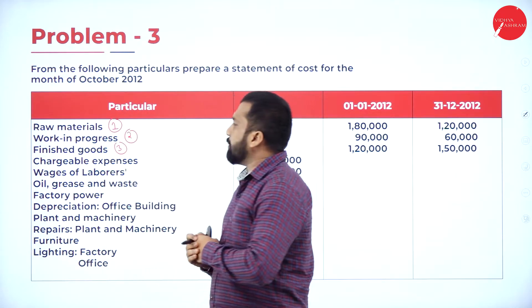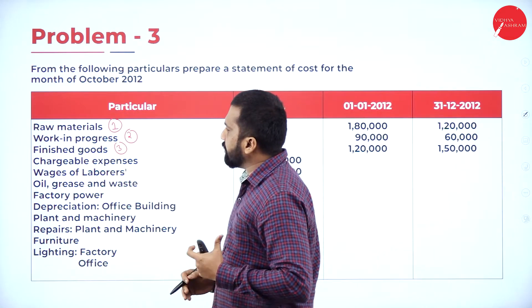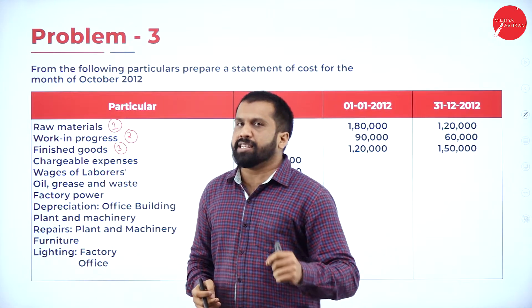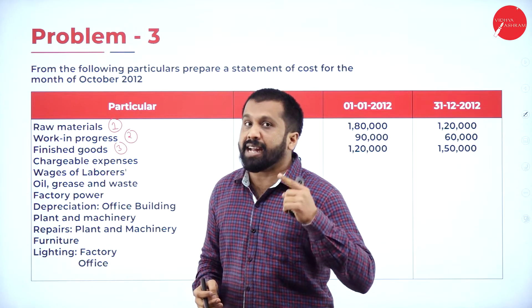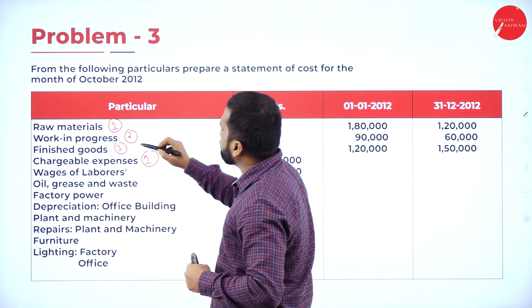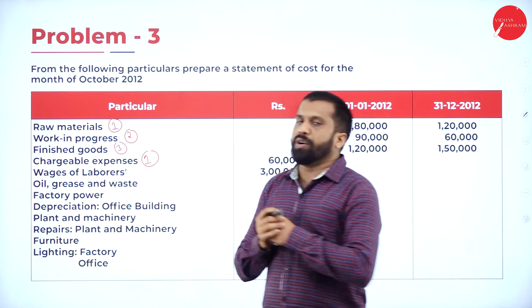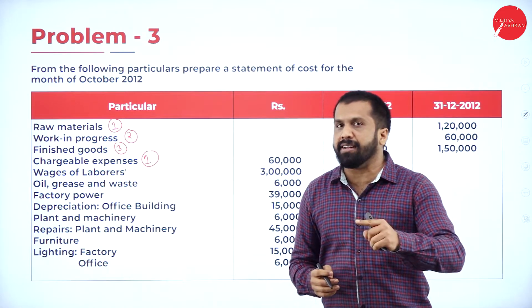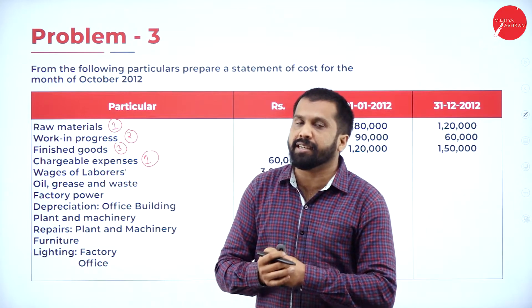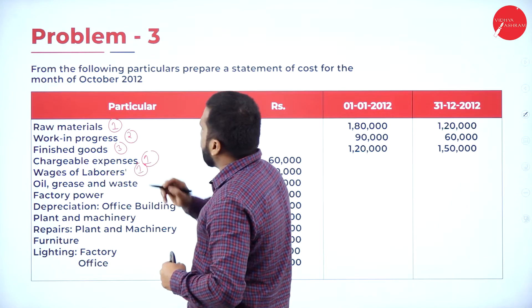Chargeable expenses are nothing but direct expenses, so they come under category 1. Wages of labourers — since nothing is mentioned about direct or indirect, we consider them as direct expenses, so they also come under category 1.